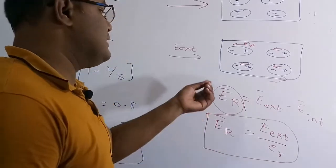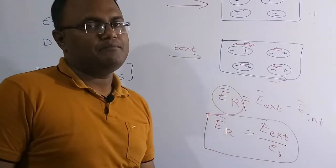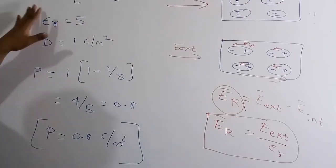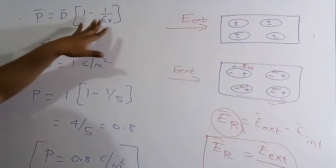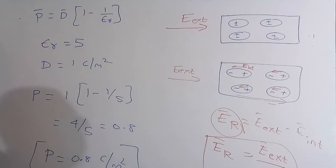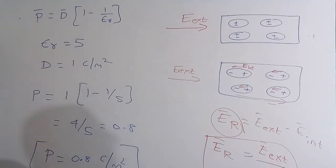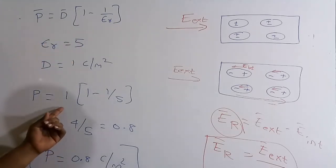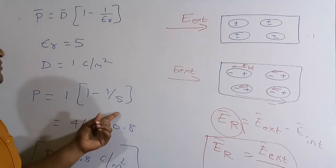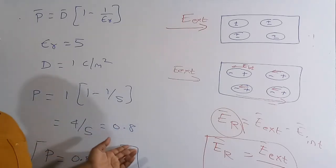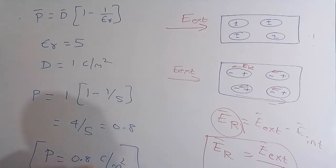Using P-bar equals D-bar times (1 minus 1/epsilon_r) with epsilon_r equals 5 and D equals 1 C/m²: P equals 1 times (1 minus 1/5) equals 4/5 equals 0.8 C/m². The electric field inside the dielectric slab is always lesser than the external applied field because epsilon_r is always greater than or equal to 1.